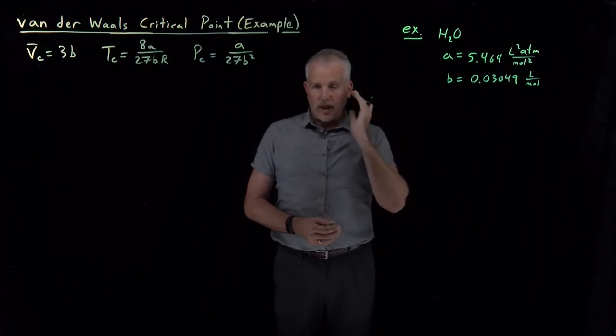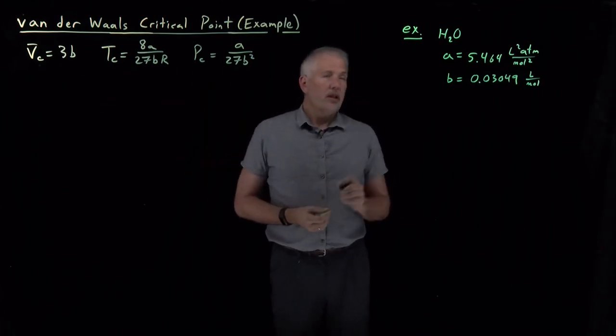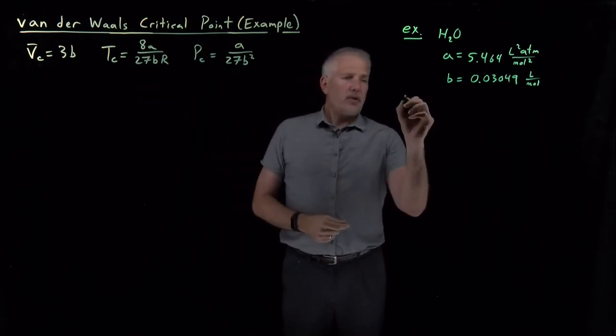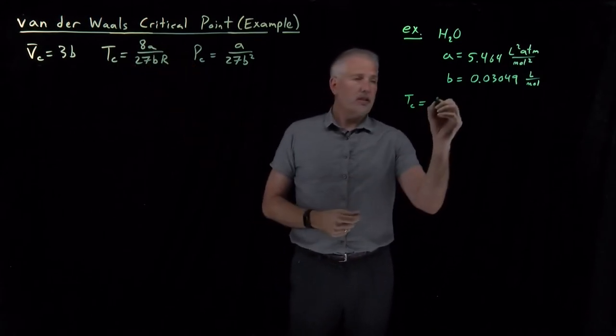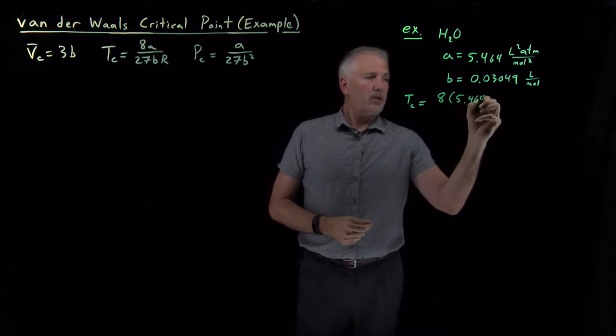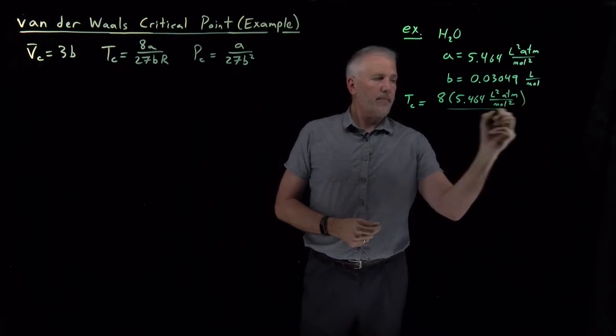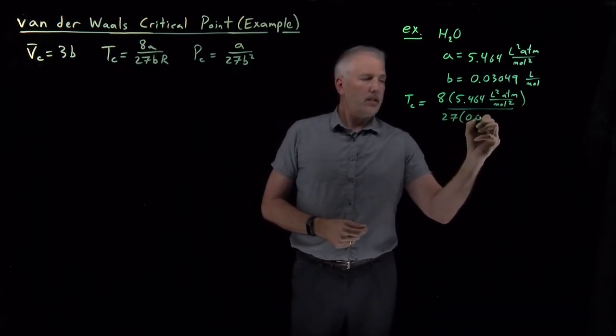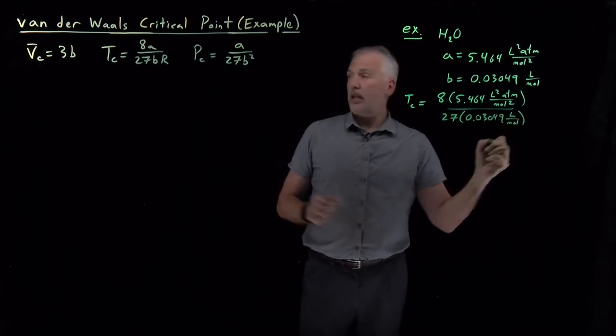We can use those to plot isotherms and also to calculate these critical properties. Let's say the most interesting one perhaps is the critical temperature. If we just plug values into this expression, 5.464, 8A, in the denominator we have a 27 and a B, and an R.